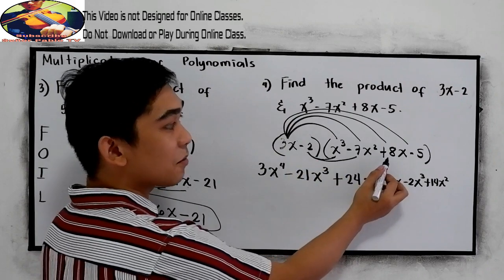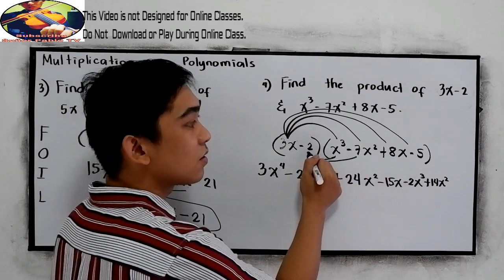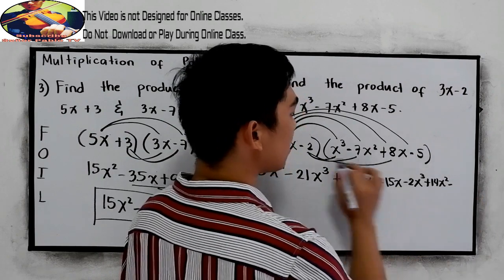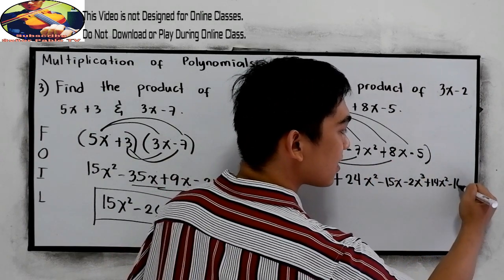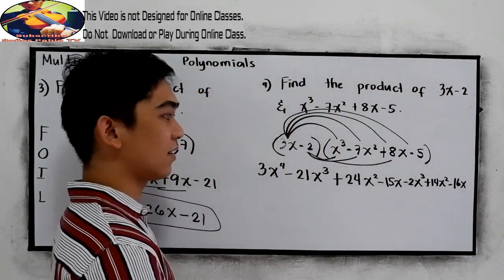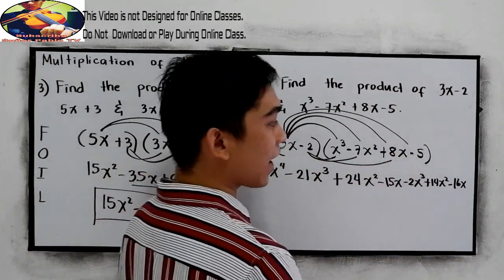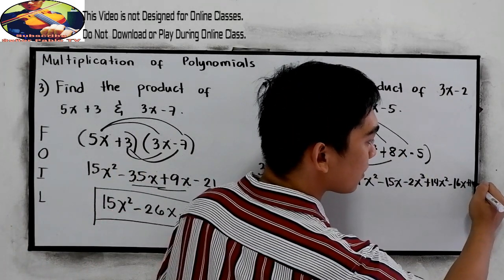Negative 2 times positive 8x. So negative. 2 times 8, 16x. And negative 2 times negative 5, positive 10.